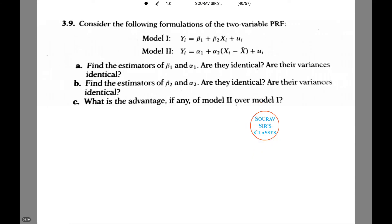Now we consider the following formulations of the two variables PRF. Model 1 is given as yi equals to beta 1 plus beta 2 xi plus ui and model 2 is yi equals to alpha 1 plus alpha 2 xi minus x bar plus ui. Let's see what number a is asking.